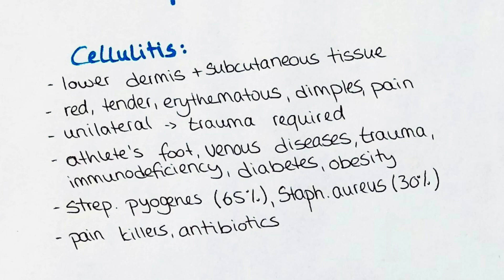Additional risk factors include trauma, immunodeficiency due to disease or medication, diabetes, chronic kidney or liver disease, as well as obesity, pregnancy, and alcohol abuse. Streptococci are the most common cause of cellulitis — Streptococcus pyogenes more specifically — which is the causative agent of approximately 65% of cases, directly followed by Staphylococcus aureus, which causes approximately 30% of cases.